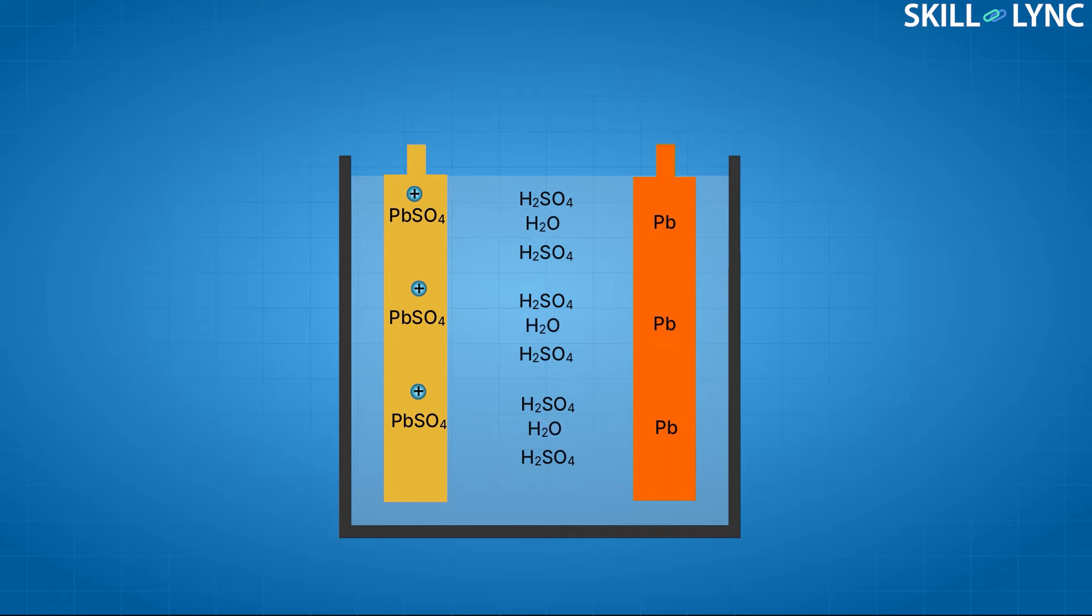In the negative electrode, the pure lead also reacts with the sulfuric acid and forms lead sulfate with the release of two electrons, thus gaining a negative charge. Here we have an imbalance in the charges of the two electrodes.